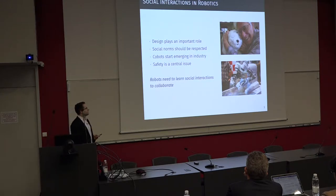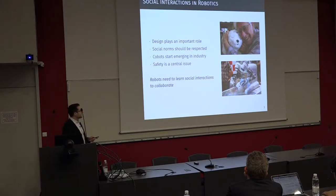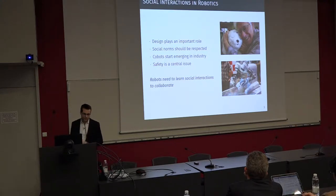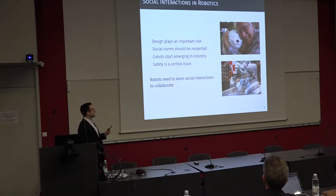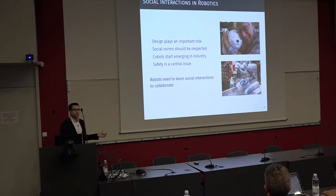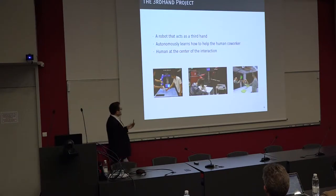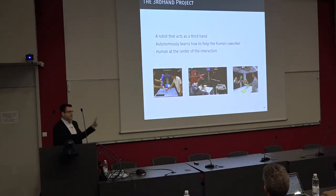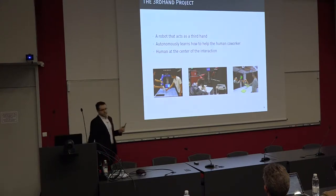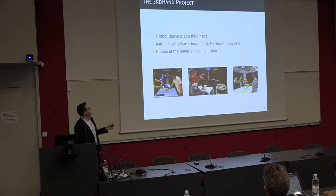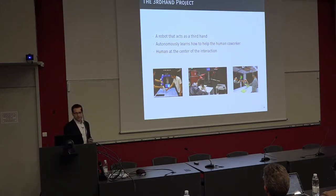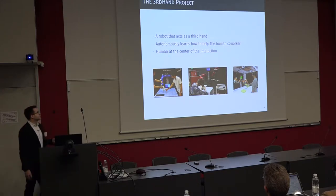Yet good design is not enough to have good interactions. You also need social norms — robots need to understand them. For example, here you have a collaborative robot, or cobot, with two modes of interaction. When nobody is around, it works very fast. But as soon as a human enters its vicinity, it slows down — not only for human safety, but also because humans prefer it this way. The Third-End project, of which this thesis was part, aims at creating a social robot for industry that acts as a third hand for a human co-worker. For that, you need to be able to learn how to help the human co-worker, and in all our experiments we tried to keep the human at the center of the interaction.